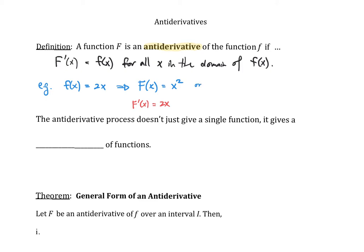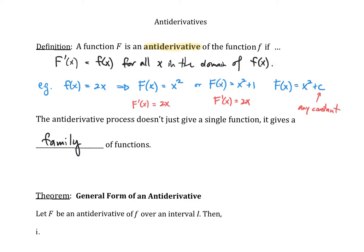Capital F of x could also be x squared plus 1, and when we take the derivative of this capital F, f prime of x is equal to 2x plus 0, which is just 2x. So in general, we write capital F of x as x squared plus c, where c is allowed to be any constant.